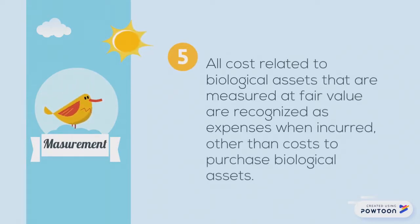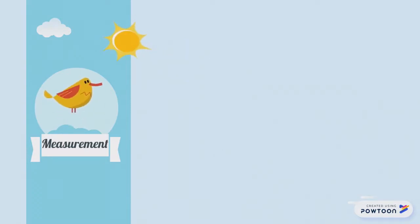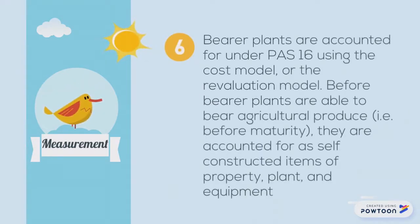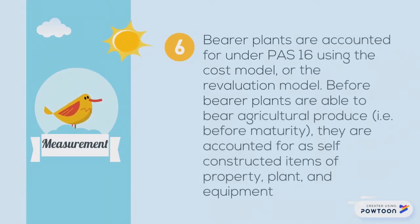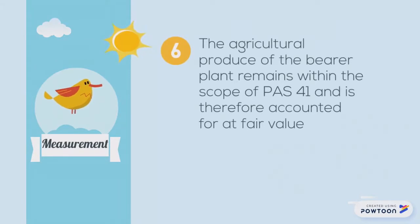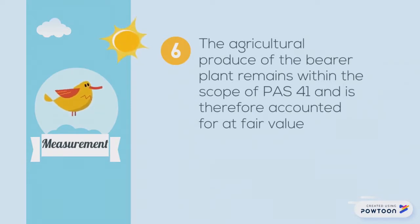Bearer plants are accounted for under PAS 16 using the cost model or the revaluation model. Before bearer plants are able to bear agricultural produce — for example, before maturity — they are accounted for as a self-constructed item of property, plant, and equipment. The agricultural produce of bearer plants remains within the scope of PAS 41 and is therefore accounted for accordingly.